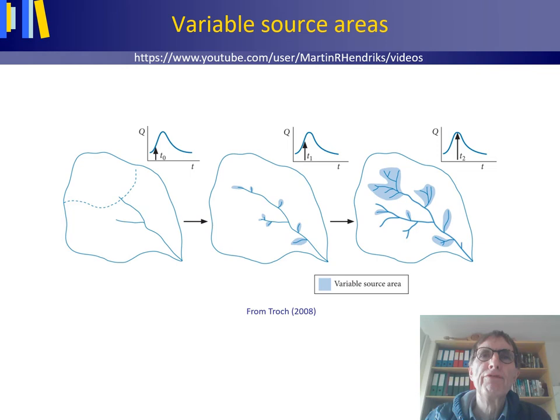This short video lecture is on principal locations of flow convergence in drainage basins, the Hewlett hypothesis of runoff formation in humid climates, and variable source areas.